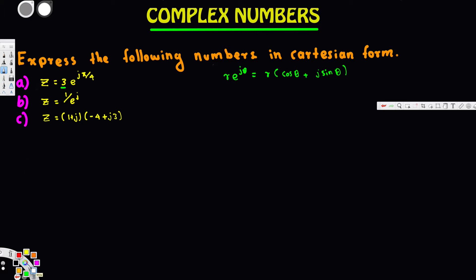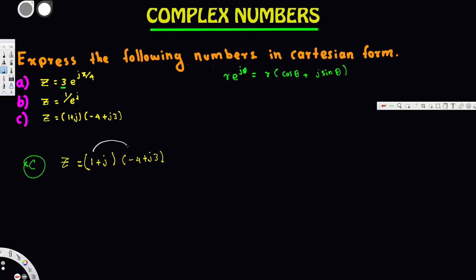Now let's go to the last one, part c. In part c we have z equal to (1 + j)(-4 + j3). It seems like it's already in rectangular form but it's not simplified. To simplify, we can just FOIL it — multiply each term out.